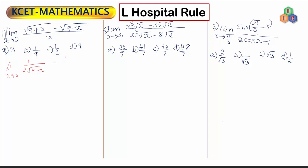Now I'll differentiate root of (9 minus x). It is 1 by 2 root (9 minus x) into the differential coefficient of (9 minus x). The differential coefficient of 9 is 0 and of minus x is minus 1, all divided by the differential coefficient of x which is 1.